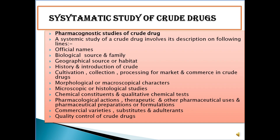How will you study about the systematic study of crude drug? A systematic study of crude drug involves its description on the following lines: official names; biological source and family; geographical source or habitat; history and introductions of crude drugs; cultivation; collection; processing for market and commerce in crude drugs; morphological or macroscopical characters; microscopic or histological studies; chemical constants or qualitative chemical tests; pharmacological actions; therapeutic and other pharmaceutical uses; commercial varieties, substitutions, and adulterants; and quality control of crude drugs.